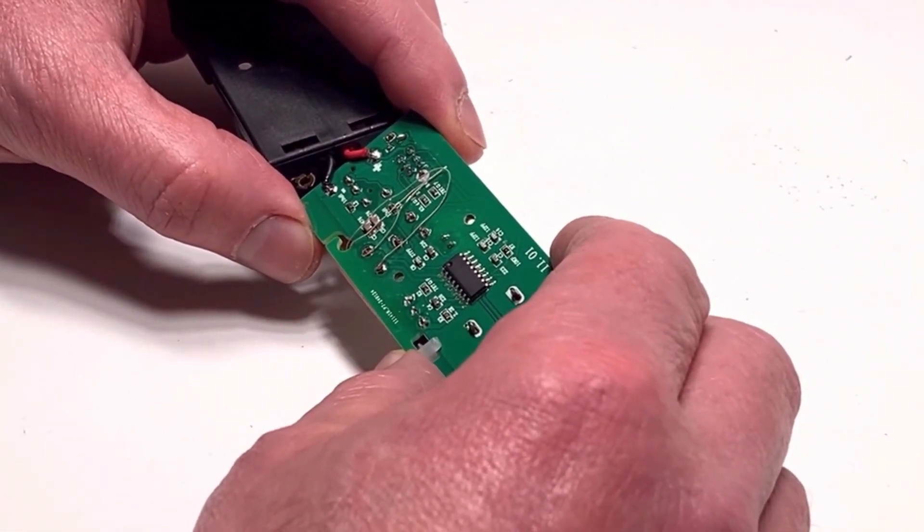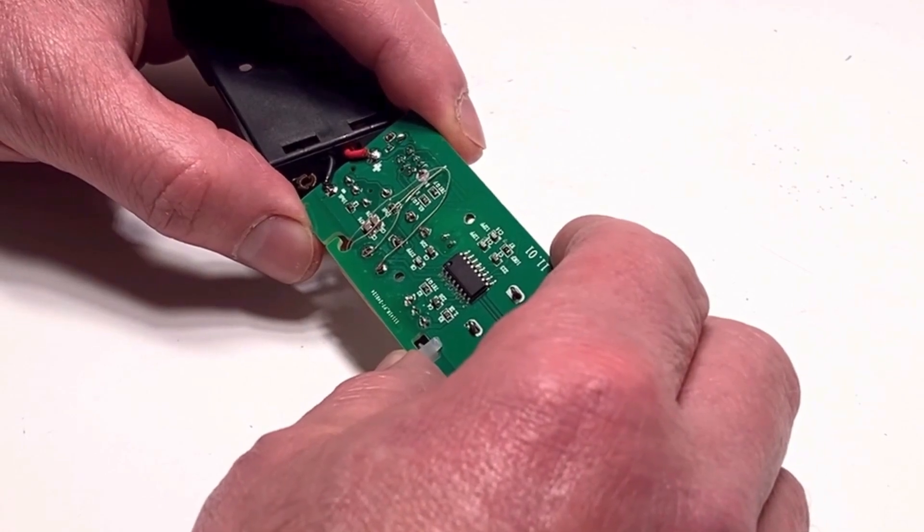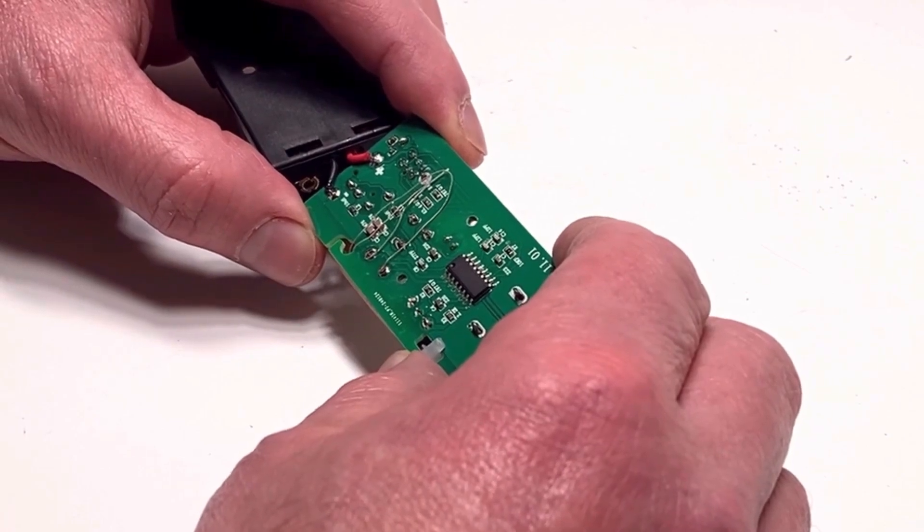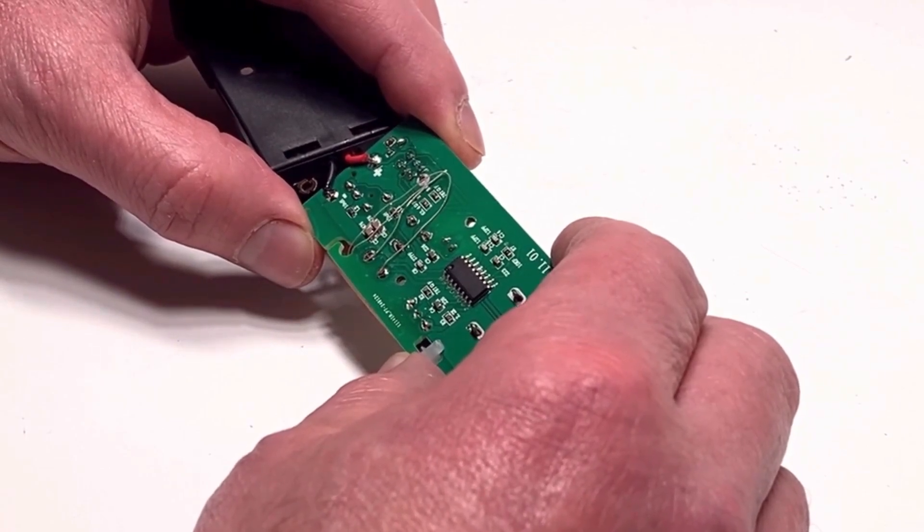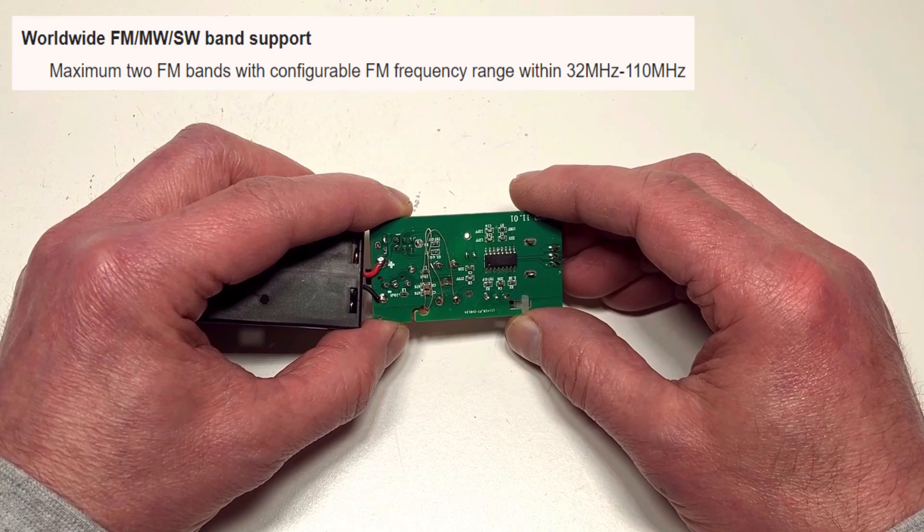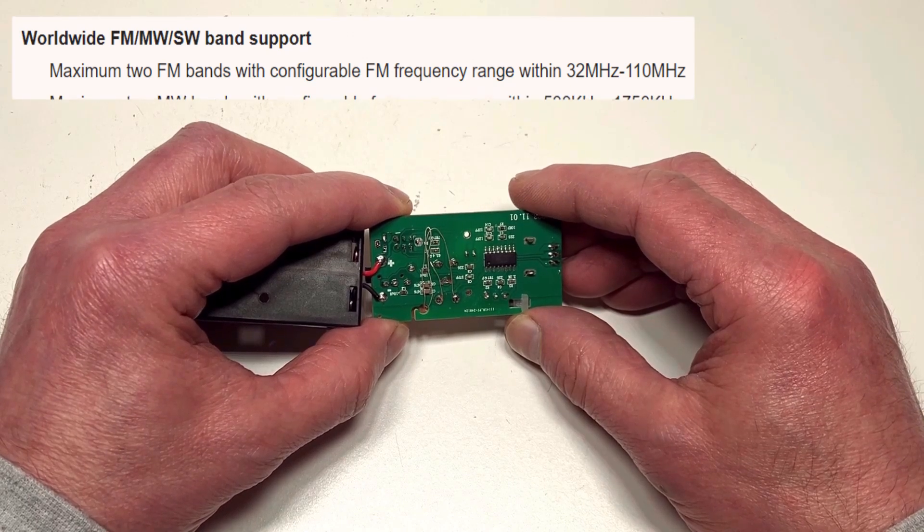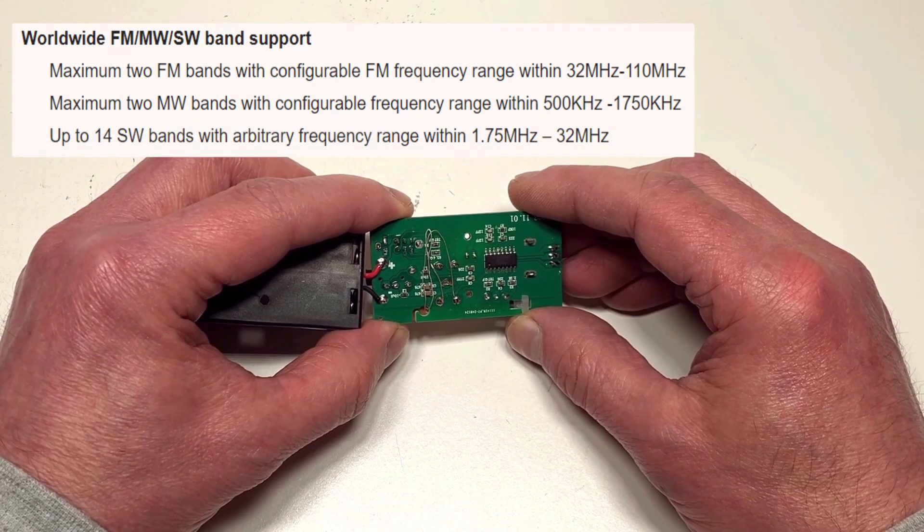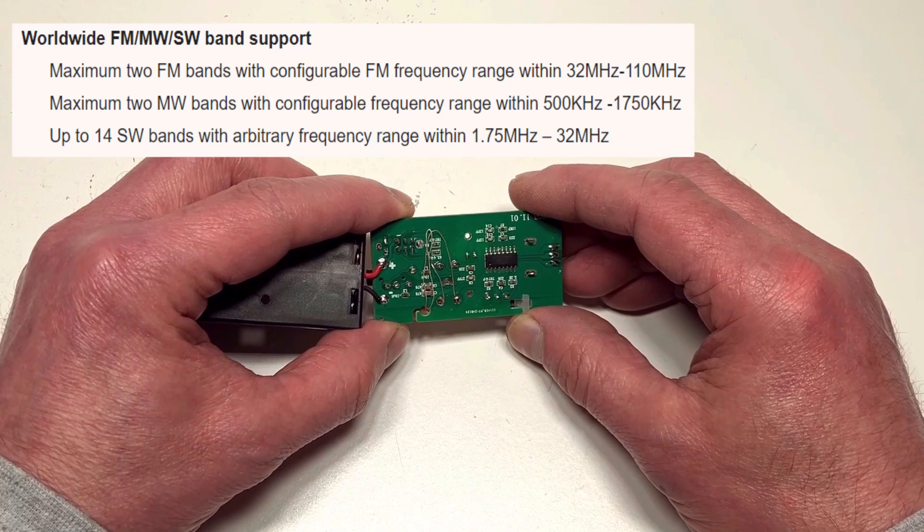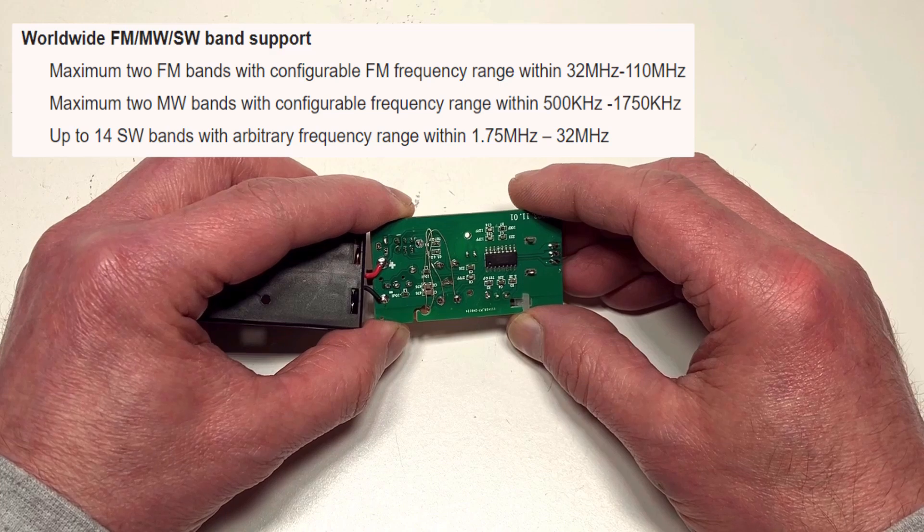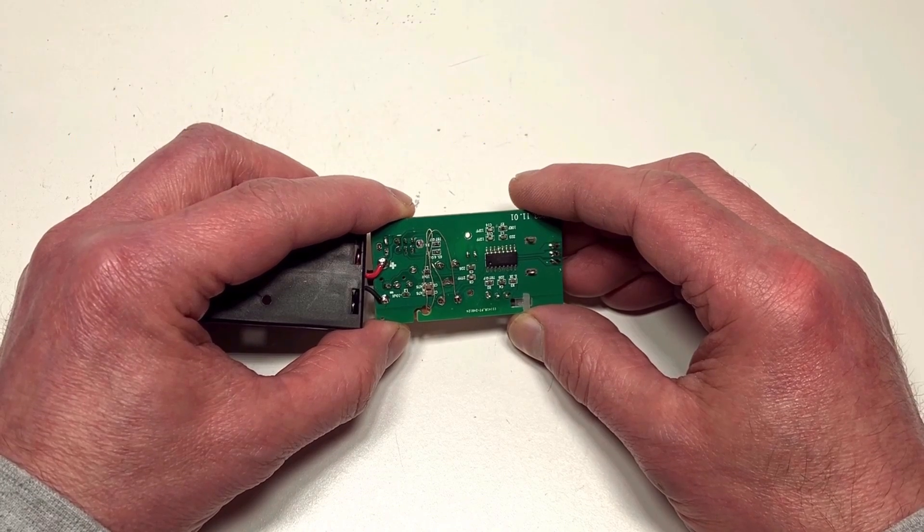And you must be thinking to yourself, okay, so far, so normal. However, I looked at the specifications on this little IC and it revealed something interesting. First of all, it's configurable and it's got a greater coverage than what you initially think. So FM coverage, according to the data sheet, is between 32 and 110 megahertz. AM is between 500 and 1750 kilohertz. And get this, it also covers shortwave. And shortwave is given between 1.75 to 32 megahertz.